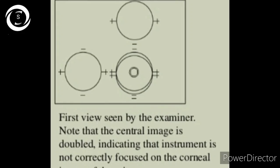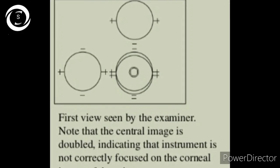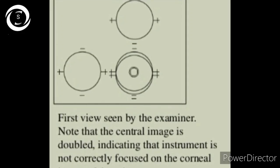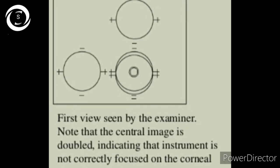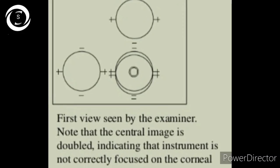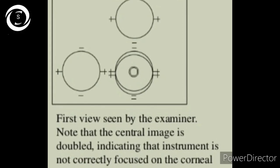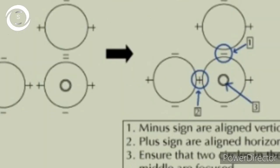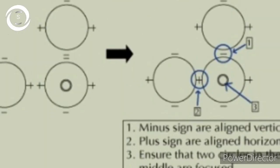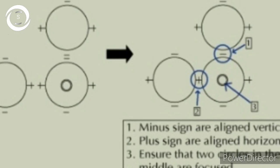If the central image is doubled, it shows the instrument is not correctly focused on the central image of the mire. So first focus the central image. When the image is properly focused, the minus sign is aligned vertically.